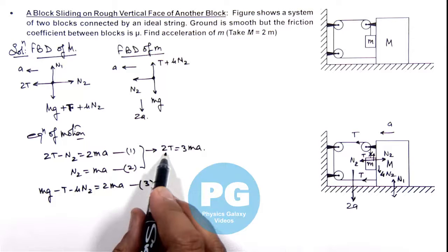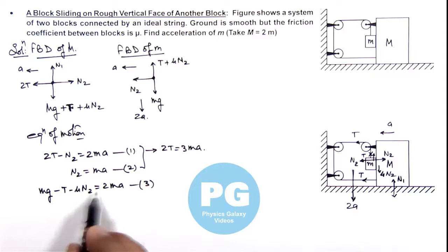If we substitute the value of T and N2 in equation 3 we can see what we are getting: mg minus T we can write as 3m ay minus N2 is m ay so this can be written as mu m ay is equal to 2m ay. So in this equation we can cancel the value of m.